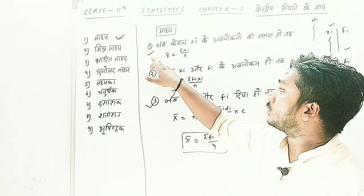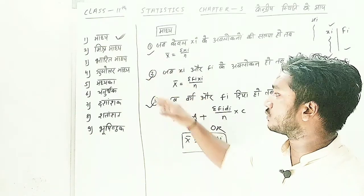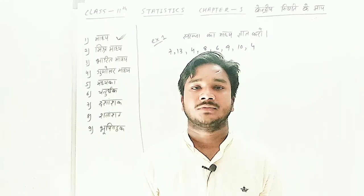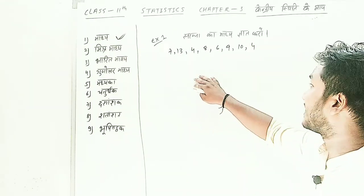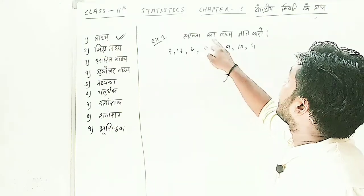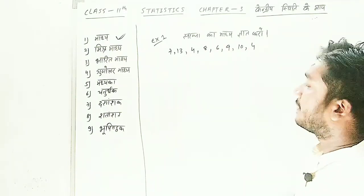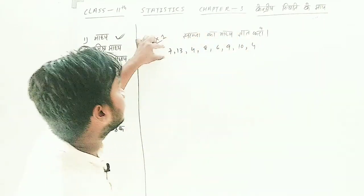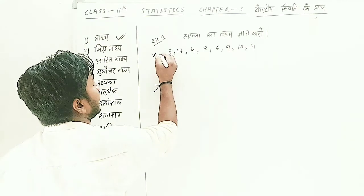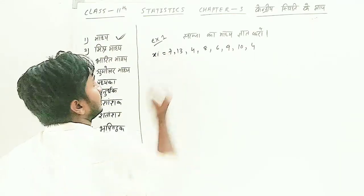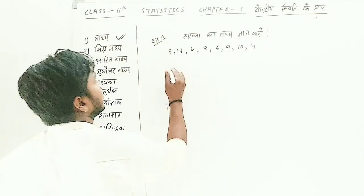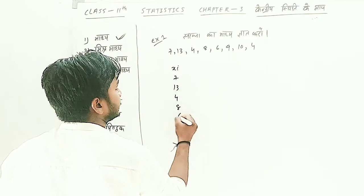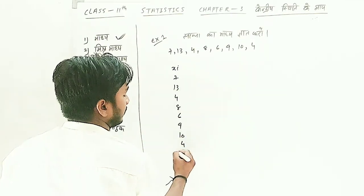First, let's look at the first example. When only a single line of observations is given, we call these values Xi. The values here are: 7, 13, 4, 8, 6, 9, 10, and 4. We need to find Madhya — the mean. X̄ is how we denote the mean.